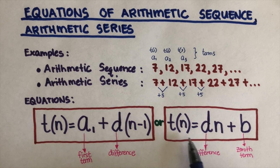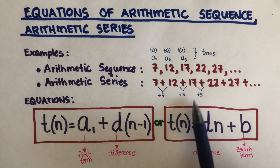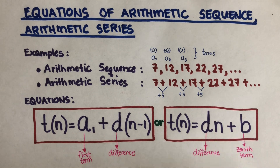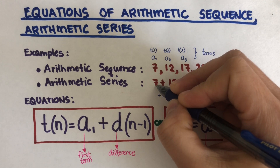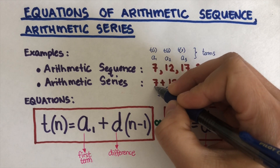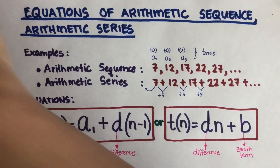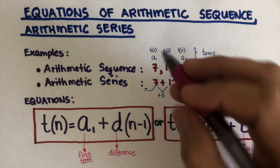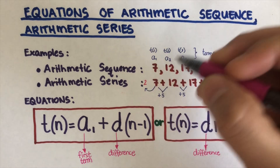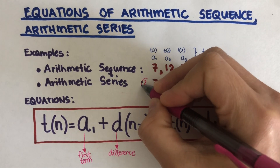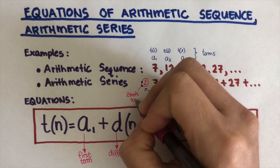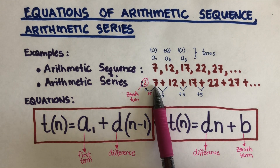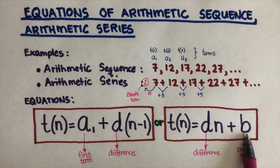The second equation is: t of n equals d times n plus b, where d is the difference and b is the zeroth term. The zeroth term means you go backwards one step from the first term. So if the first term is 2 and the sequence goes up by 5, then going back one step gives us negative... the number before the first term. That number before the first term is called the zeroth term.